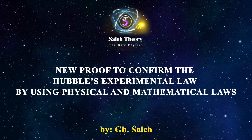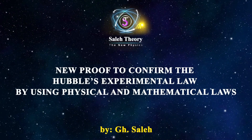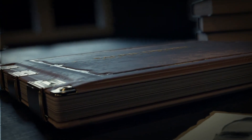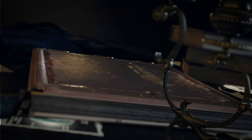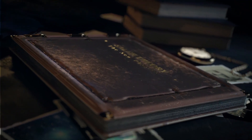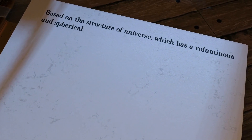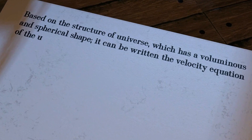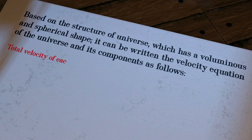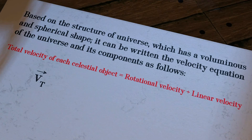New proof to confirm Hubble's experimental law by using physical and mathematical laws. Based on the structure of the universe, which has a voluminous and spherical shape, it can be written the velocity equation of the universe and its components as follows. Total velocity of each celestial object is equal to rotational velocity plus linear velocity.